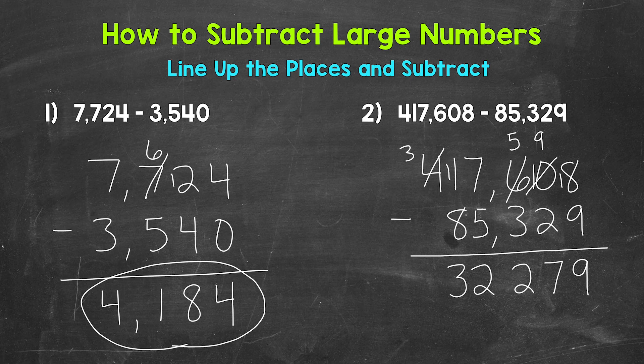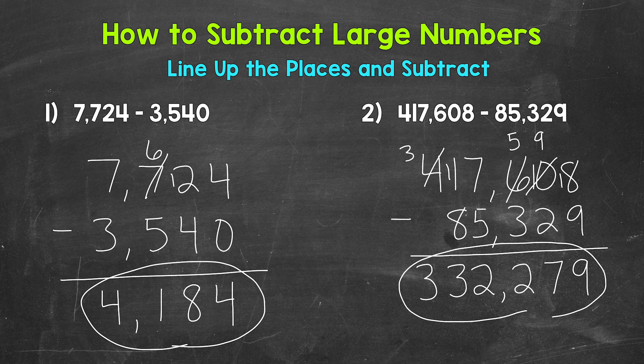And then the hundred thousands place. We just have a three. So we can bring that three down. Place a comma in our answer. And we end up with 332,279.